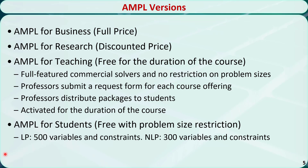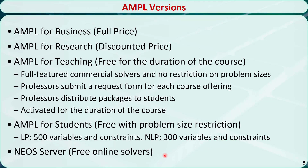AMPL for Students is a free demo version aimed to help students quickly get familiar with formulating and solving small-scale optimization models. There are some problem size restrictions: for linear programming problems, it is limited to 500 variables and constraints; for nonlinear programming problems, it is limited to 300 variables and constraints. We can also use the NEOS server, which contains many free online solvers. The limitation is that problems submitted will be put in a queue, and if the server is busy, it may take a while before your problem is processed.